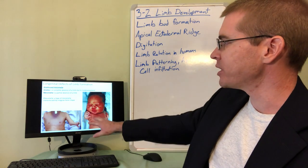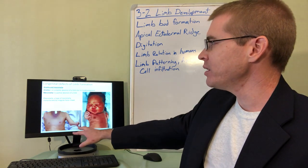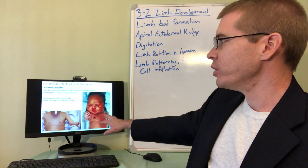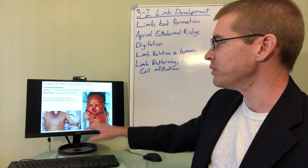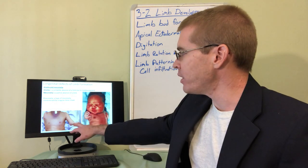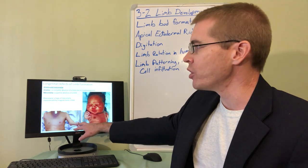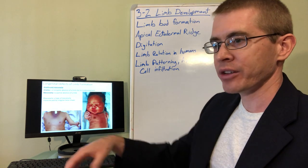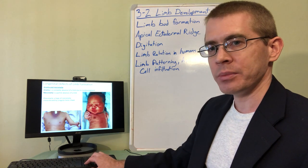Here we have examples of amelia, or the complete absence of a limb, or meromelia, which is the partial absence of a limb. And then here we have on the other side of this individual, phocomelia, which is basically irregular shapes to the limbs that form.